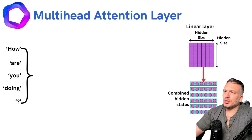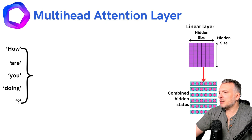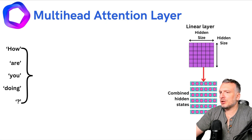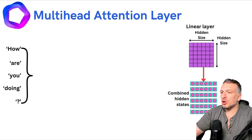Last time we talked about the attention mechanism, and now we're going to talk about the multi-head attention mechanism. What is used in a transformer is not actually a self-attention layer on its own — what we see is what we call a multi-head attention layer.